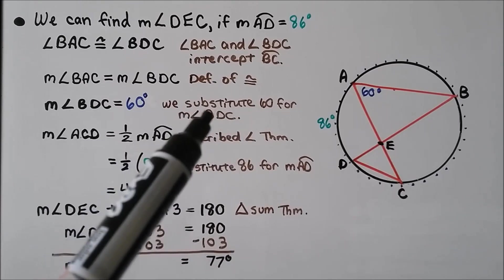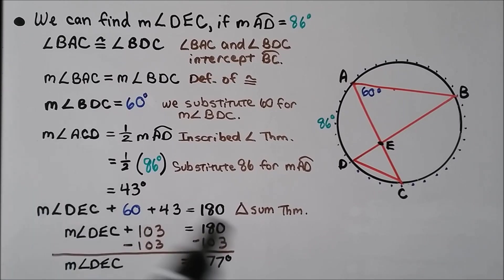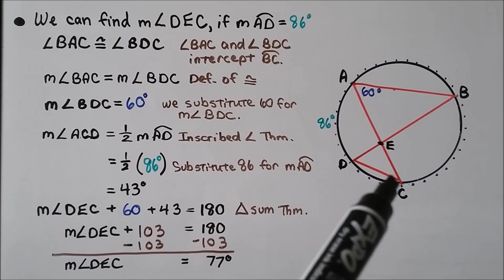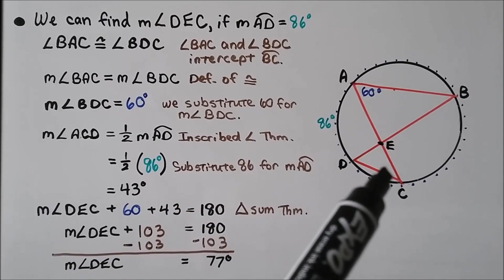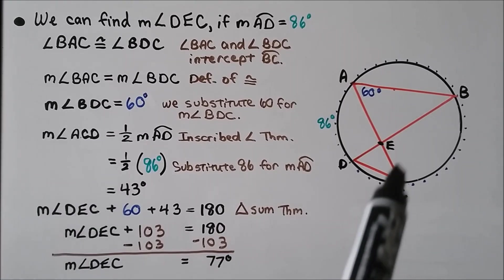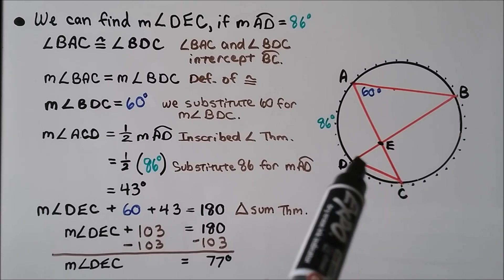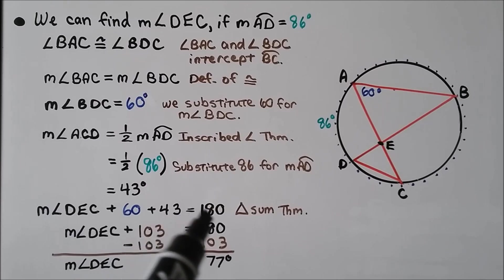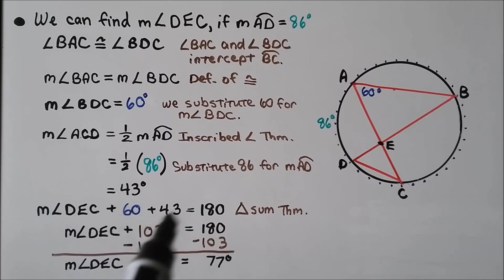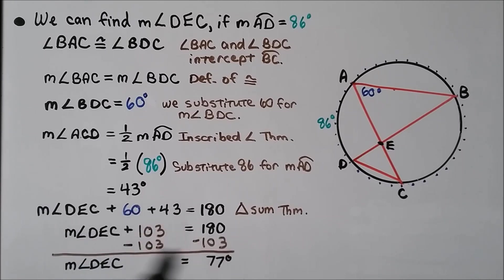The measure of angle ACD equals half the measure of arc AD. Since arc AD is 86 degrees, angle ACD equals 43 degrees. By the triangle sum theorem, the measure of angle DEC plus 60 degrees plus 43 degrees equals 180 degrees. That gives us angle DEC plus 103 equals 180. Subtracting 103 from both sides, the measure of angle DEC is 77 degrees.